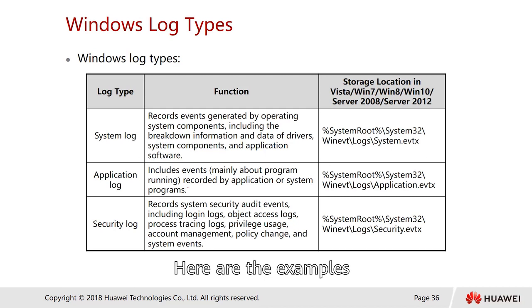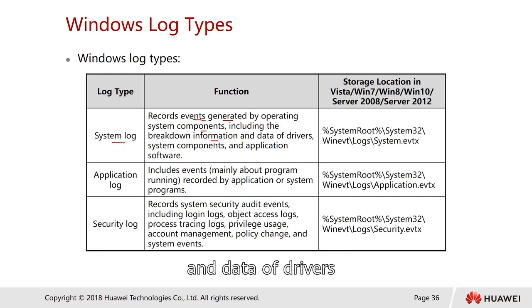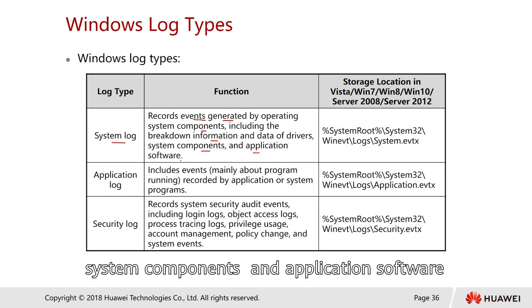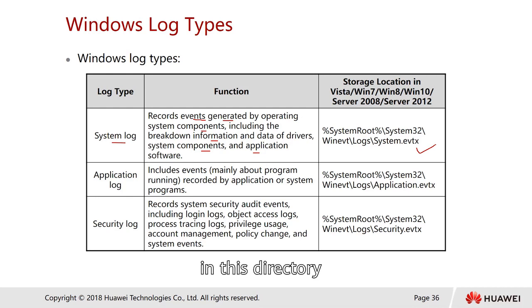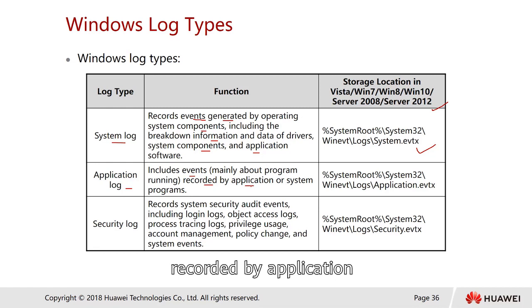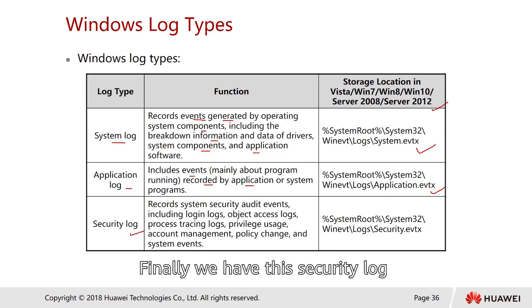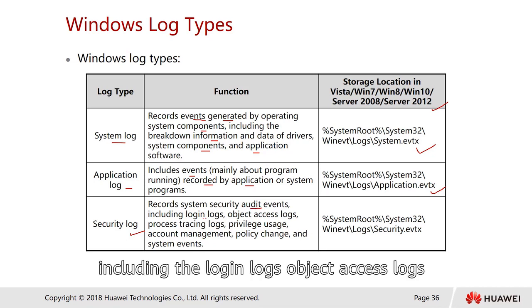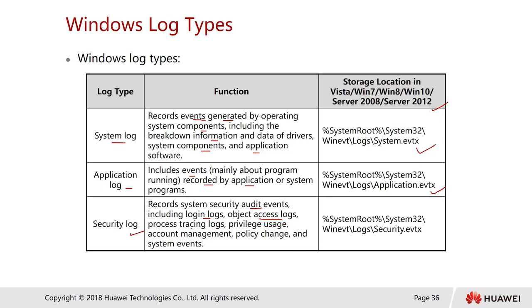System logs record events generated by operating system components, including driver breakdowns, system component data, and application software. They are located in a specific directory, applicable to Windows Vista, 7, 8, 10, and Server 2008 to 2012. Application logs record events mainly about programs running. Security logs cover security audit events: login logs, object access logs, process tracing logs, privilege usage, account management, policy changes, and system events.